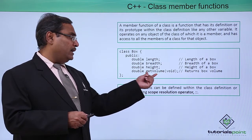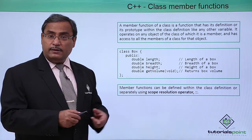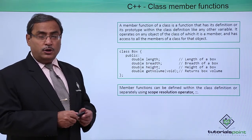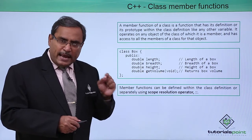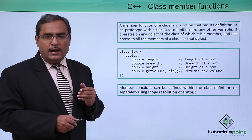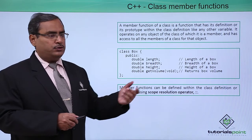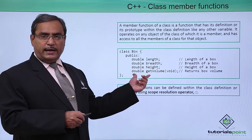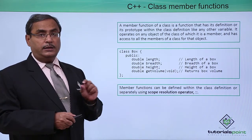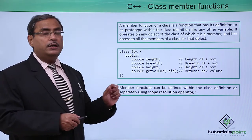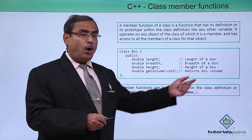We are supposed to multiply length, breadth and height and then the volume will get calculated. That is why get_volume, from its name it is clear that it will calculate the volume of a box. Here we have defined only the prototype of the respective member function get_volume. It returns the box volume.